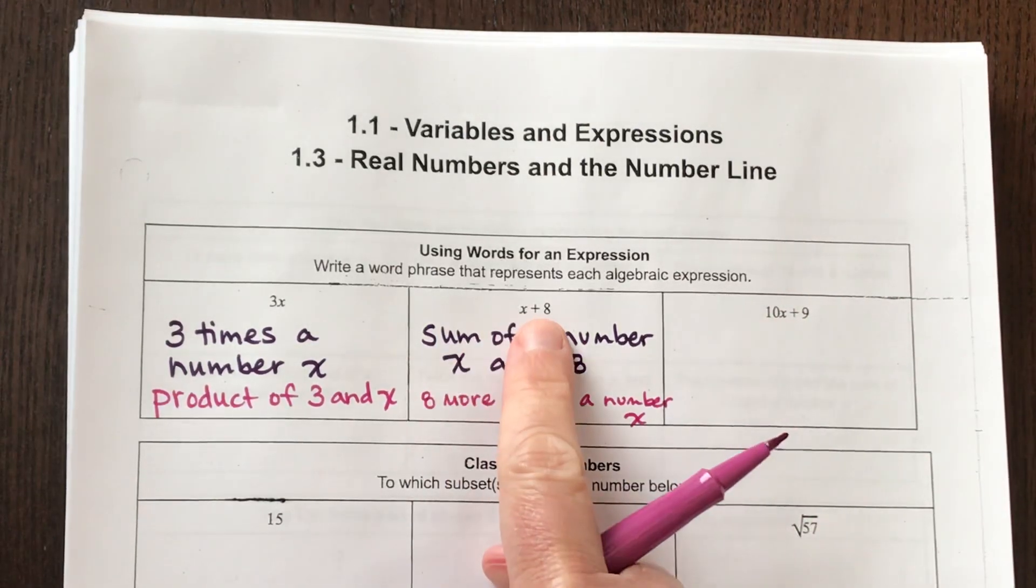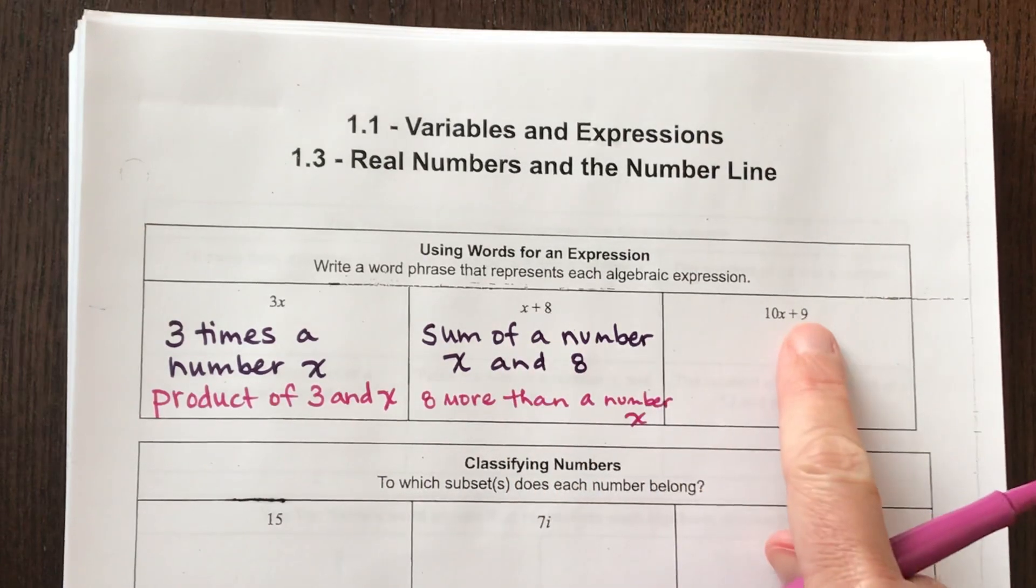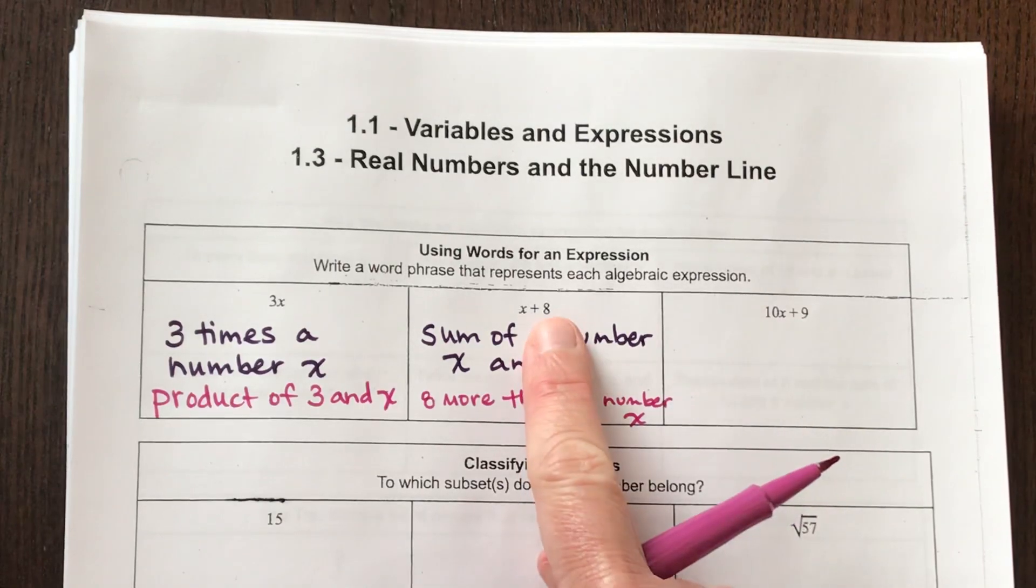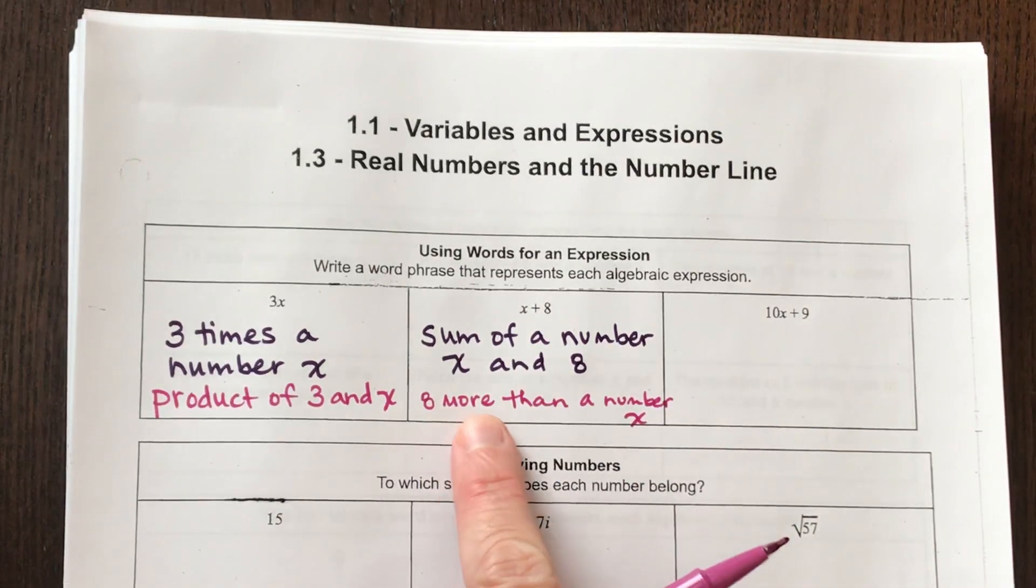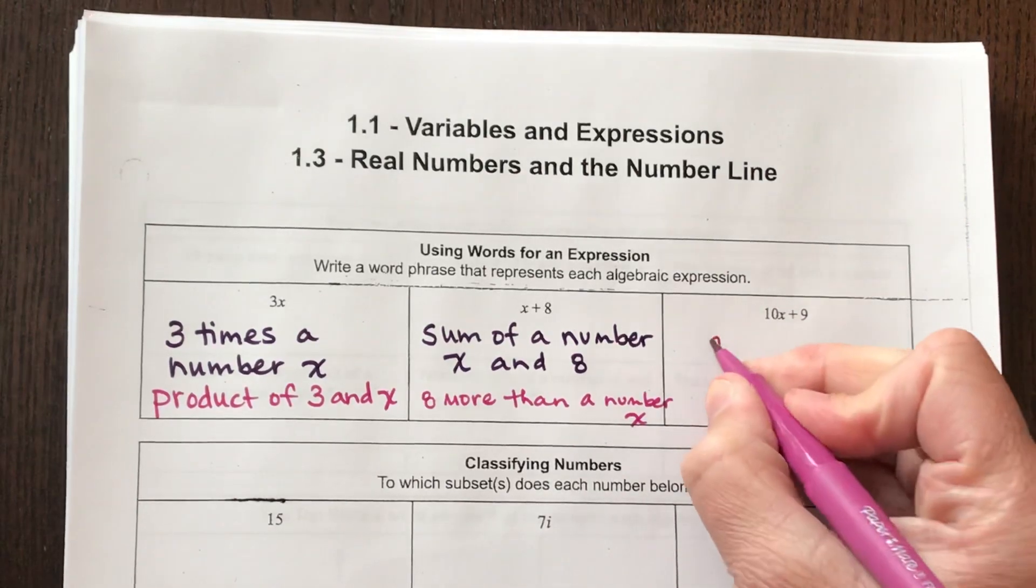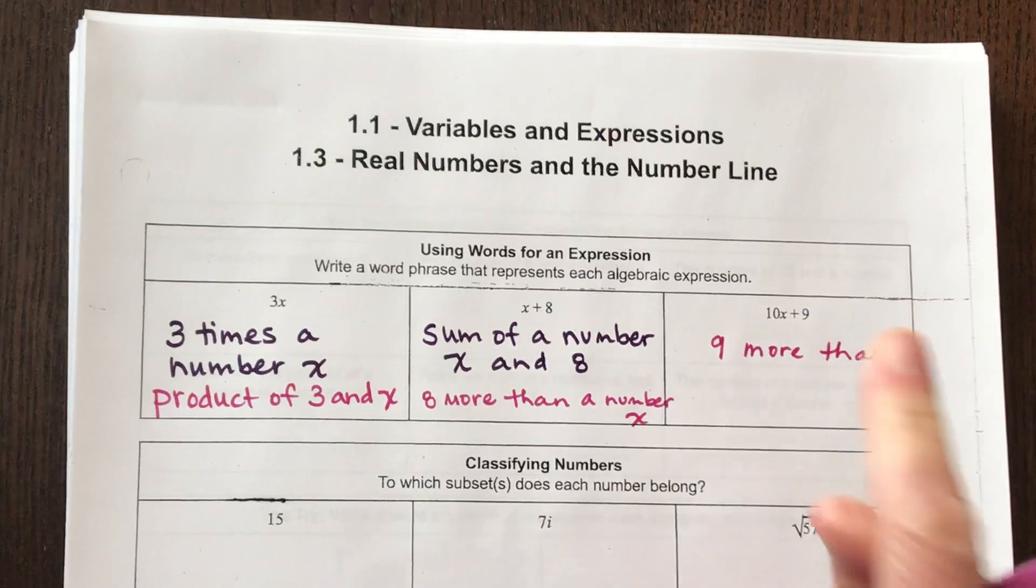So see how we did the sum of 8 and a number? Here I'm going to talk about the sum of 9. So I could use that. Or, see how we added 8 here? I could say 9 more than for this one. So I'm going to start here. 9 more than. 9 more than what?